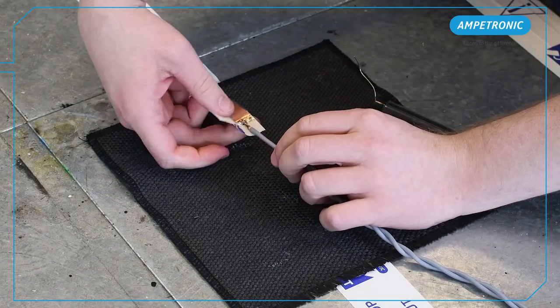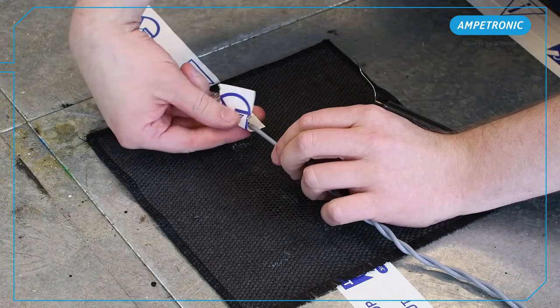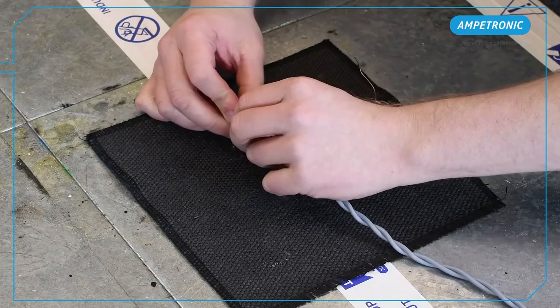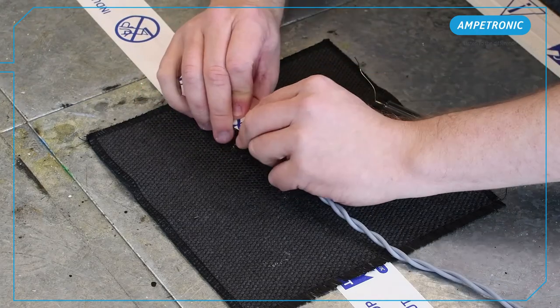Once you've made the join, apply some tape to insulate. We also offer crimps and a crimp tool which can simplify the connection of feed cables if you would prefer not to solder.